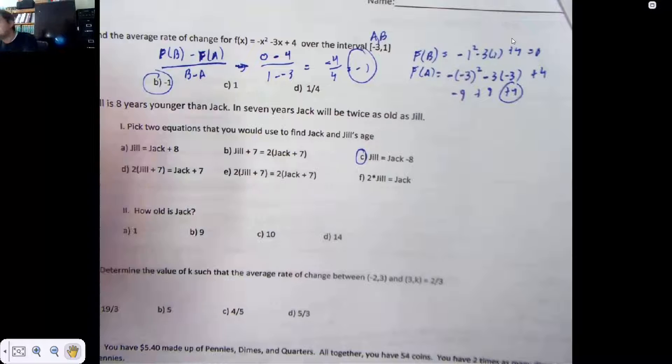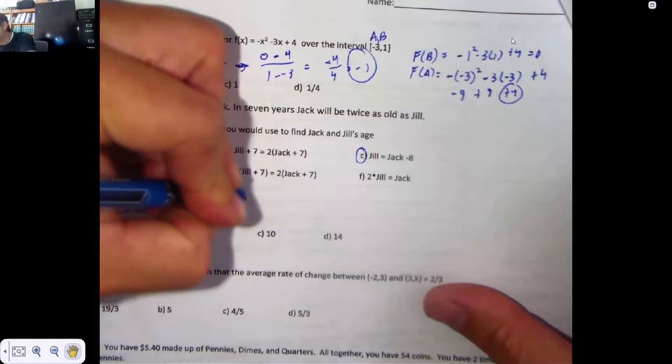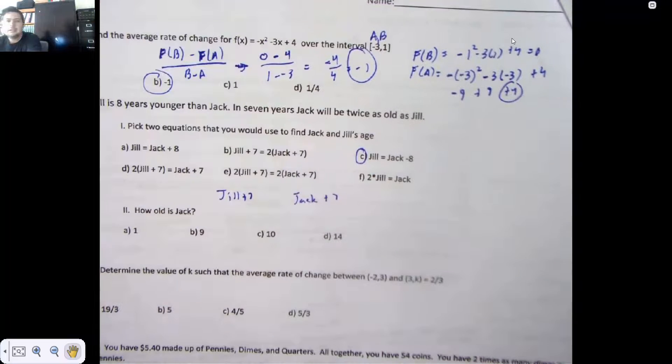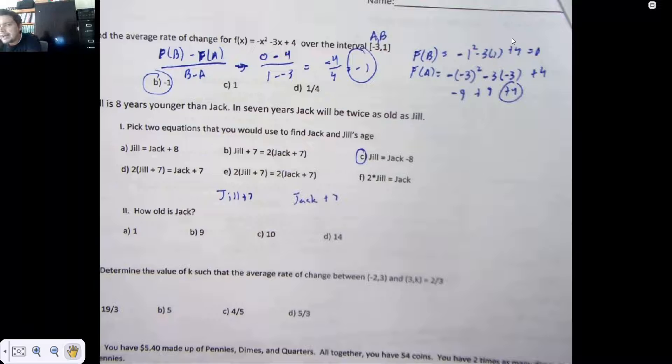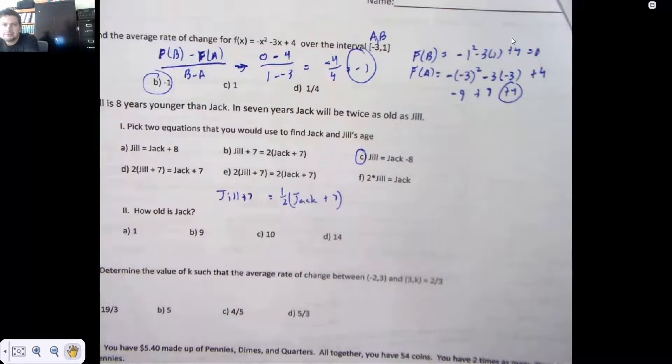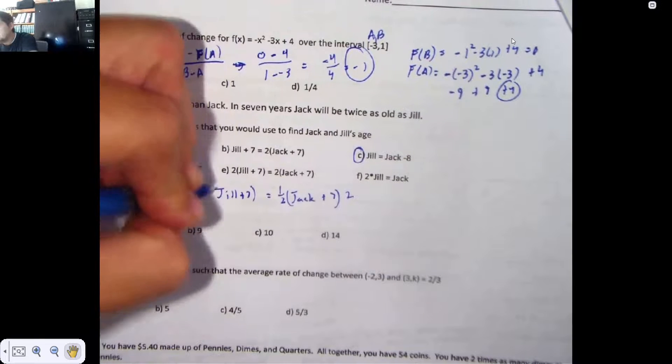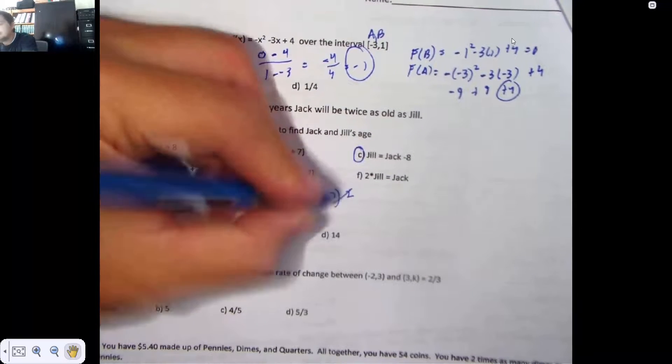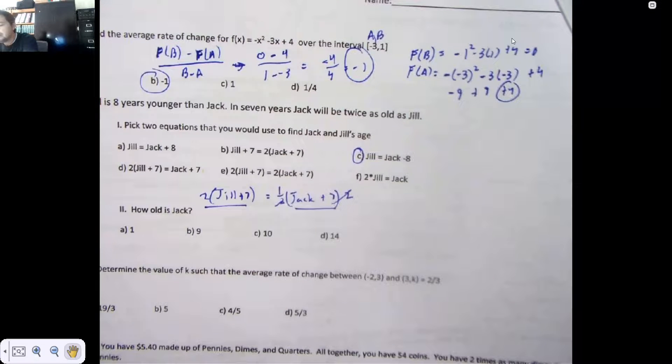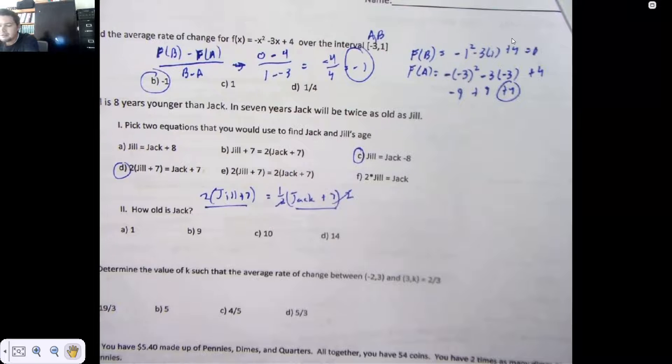Now the other one I get is hard. In 7 years, well, if 7 years happen, Jill ages 7, and Jack ages 7. It says Jack will be twice as old as Jill. That means that Jill is half Jack's age. If anything, she is half of Jack's age. Now, how do we fix the halving? We double this side. And if we double that side, we double the other side. 2 times Jill plus 7 is a single Jack plus 7. You need equations C and equations D.